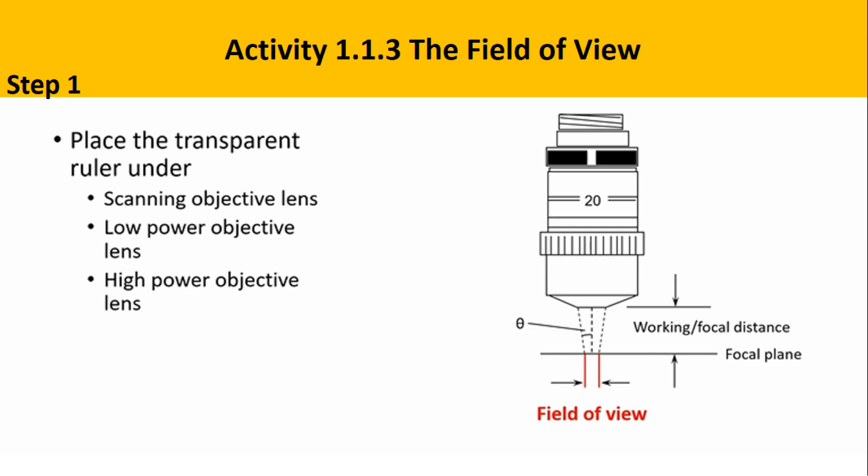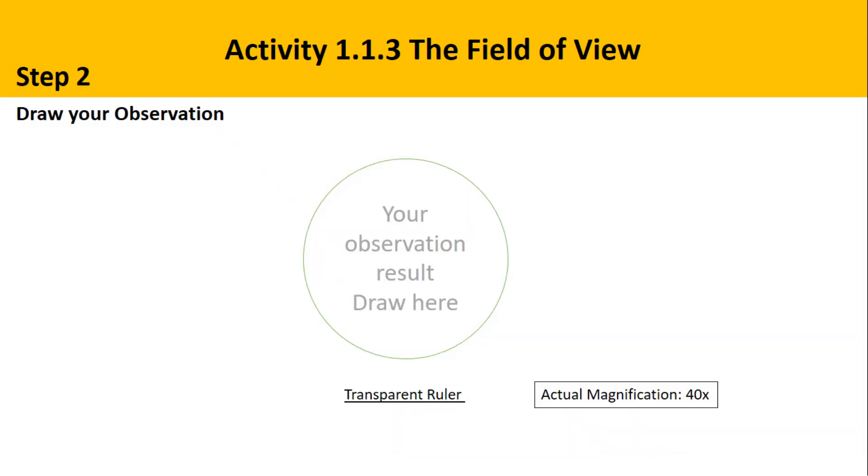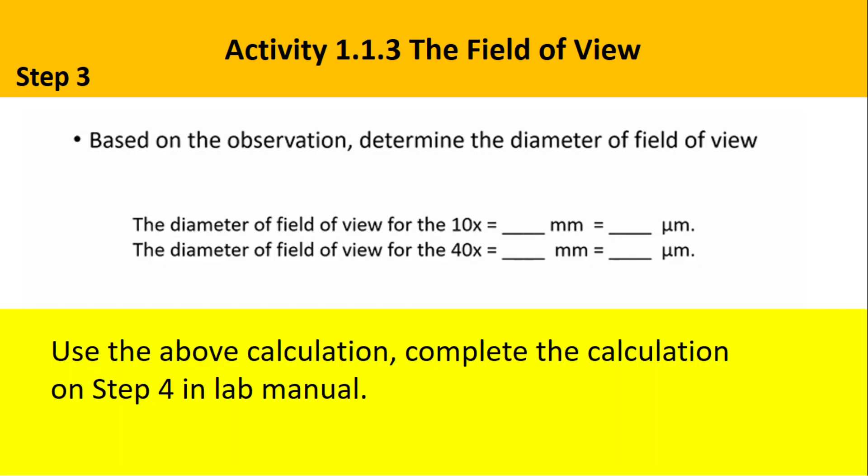Activity 1.1.3, field of view. Place a transparent ruler under the scanning objective lens, low power objective lens, and high power objective lens. Based on the view in the microscope, determine the field of view for each magnification power. Based on the observation, determine the diameter of the field of view.